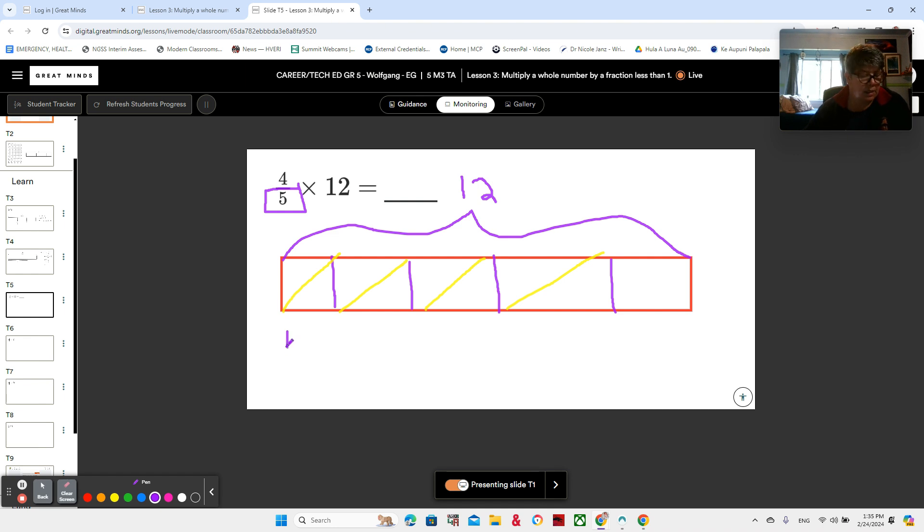Okay. So four fifths times 12. We could do four fifths times 12 over one. And if it helps you to put a one underneath, that's totally fine. Four times 12 is 48. And five times one is five. So that means that all of these yellow blocks are going to be 48 fifths. Four fifths. One, two, three, four. Four out of the total five. Out of the 12. So 48 divided by five.